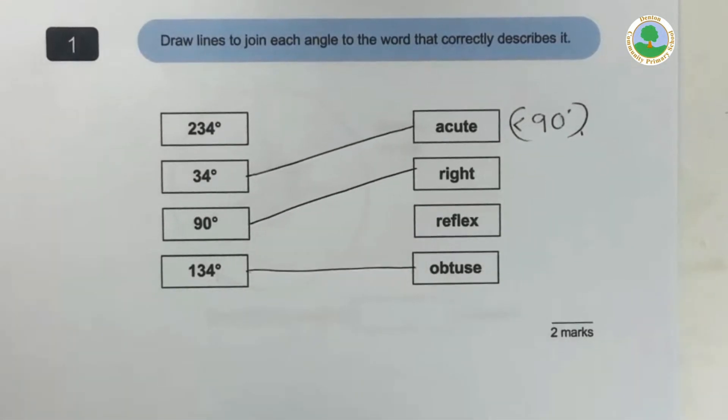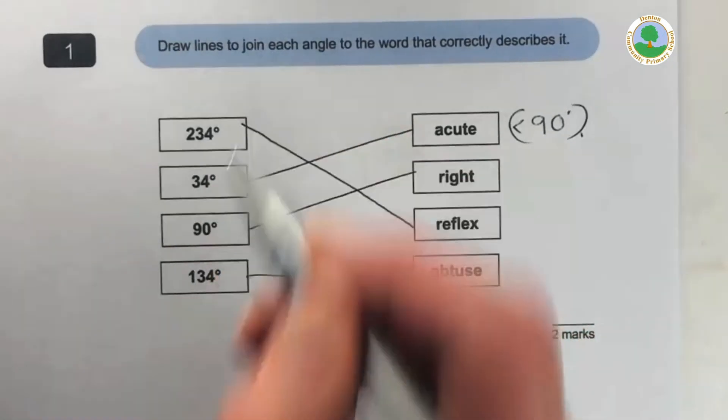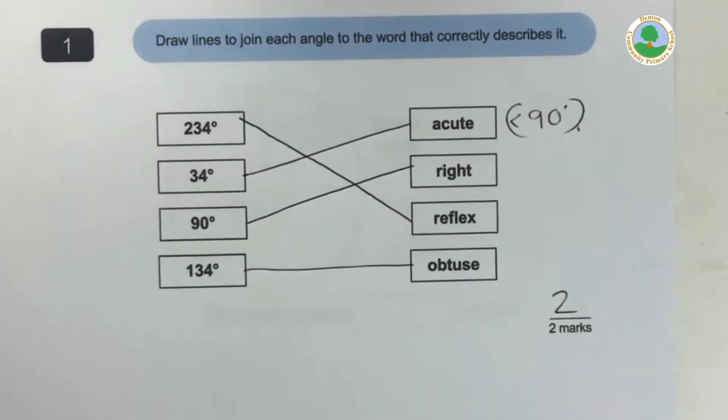And over 180, anything over 180, has almost like flexed itself right round, that's how I remember it. So reflex angle, 234. There we go, two marks for us, excellent.